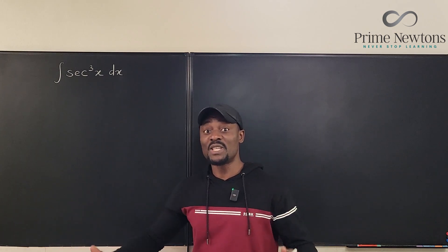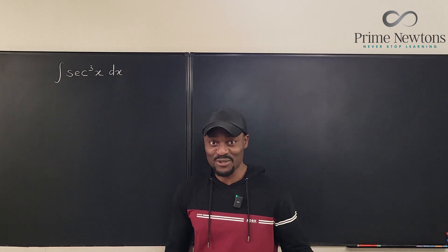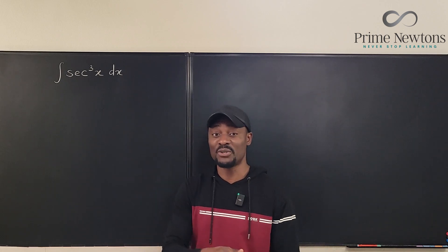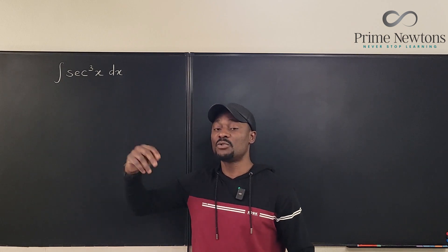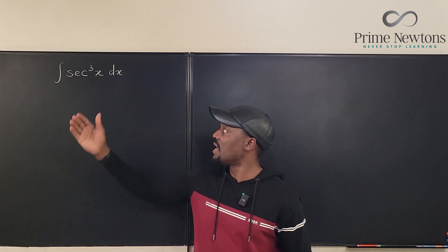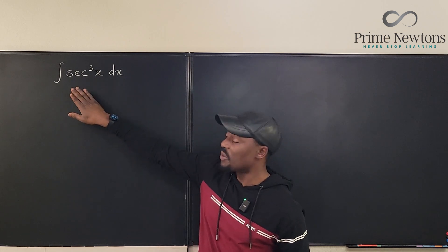You already know secant squared x when integrated is just tan x. Anti-derivative of secant squared x is tan x. So that one you already know from calculus 1, but we are not familiar with this. Now one of the strategies of integration is integration by parts.